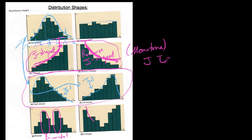And then we have the U-shaped distribution, where many values are located on the outsides — the skirts of the values — and on the intermediate values there's not much. It's kind of like the antithesis of a bell-shaped distribution. So this is just a quick video, a commentary on the nature of the shapes of distributions.